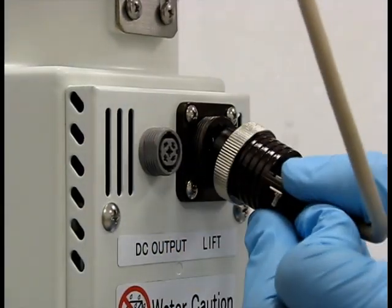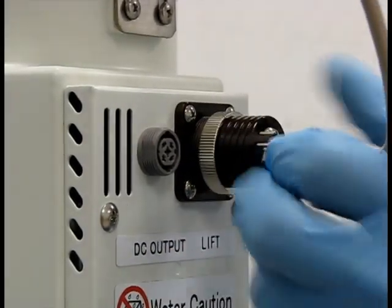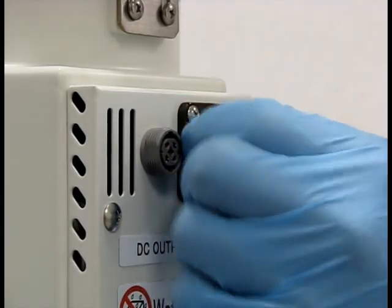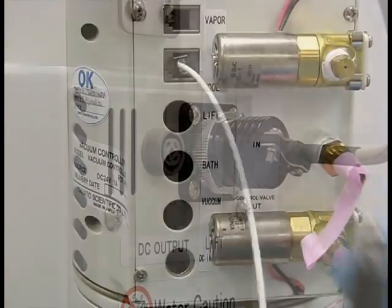Connect the rotor lift harness to the back of the rotary evaporator. The larger plug will connect to the main body, while the smaller plug will connect to the lift terminal on the vacuum regulator.